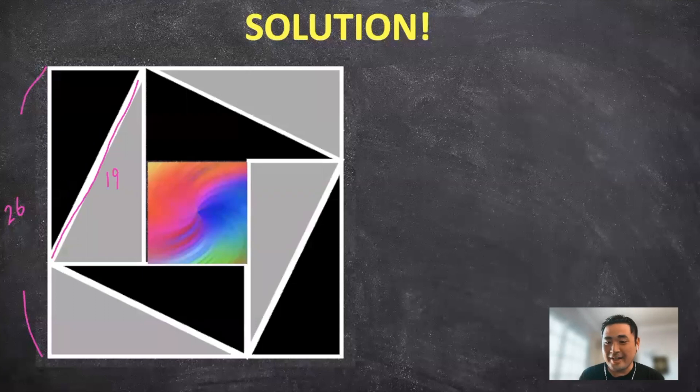All righty, guys, let's get right into it right here. So I think what would be the easiest way to think about it is if we can take the area of the outer square and subtract it from the eight triangles right here, that's an easy way to find the area of the square.